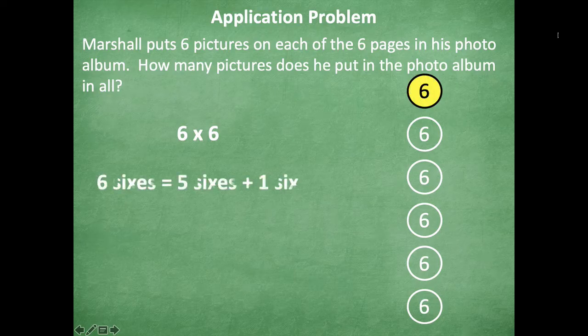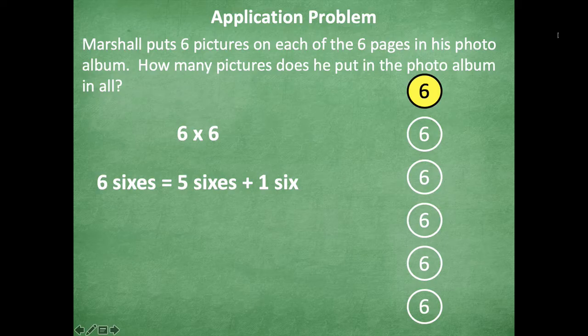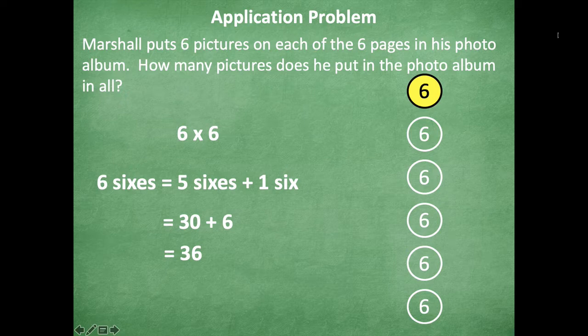I know that six sixes equals five sixes plus one six. The reason why I want to break apart into that five six plus one six is because to me it's so much easier to multiply with fives. So I know that five sixes is 30 and one six is six. So 30 plus six equals 36. So six times six equals 36. Marshall put 36 pictures in his photo album in all.